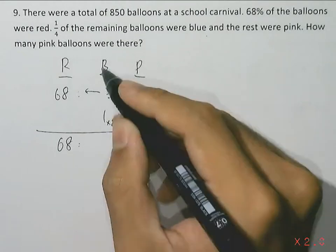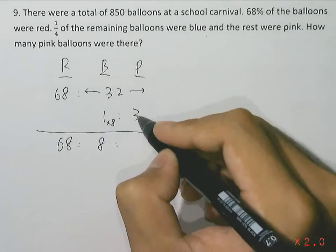So the red balloons will be 68, blue will be 8, pink will be 3 times 8, which is 24.